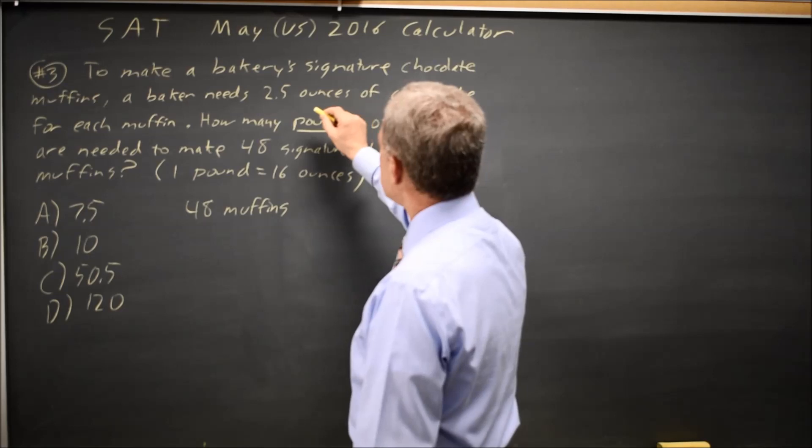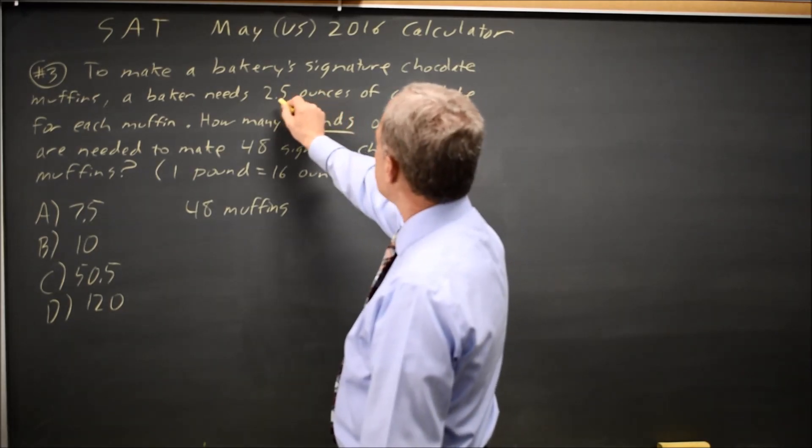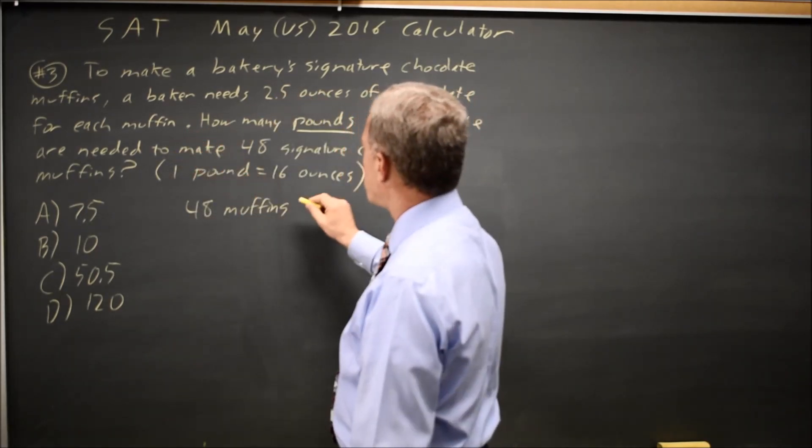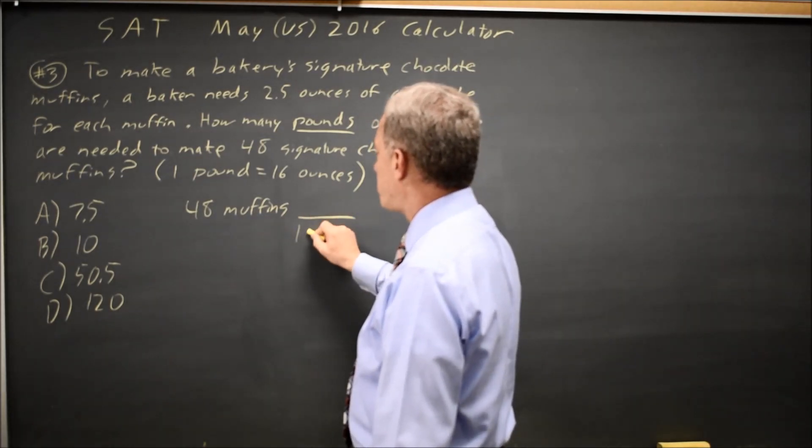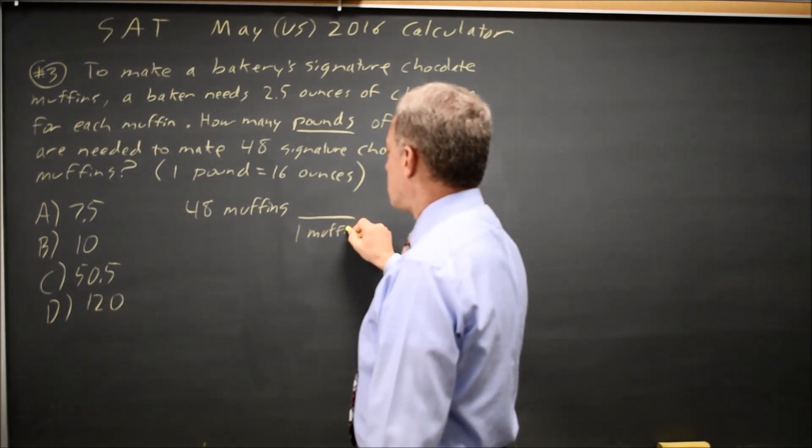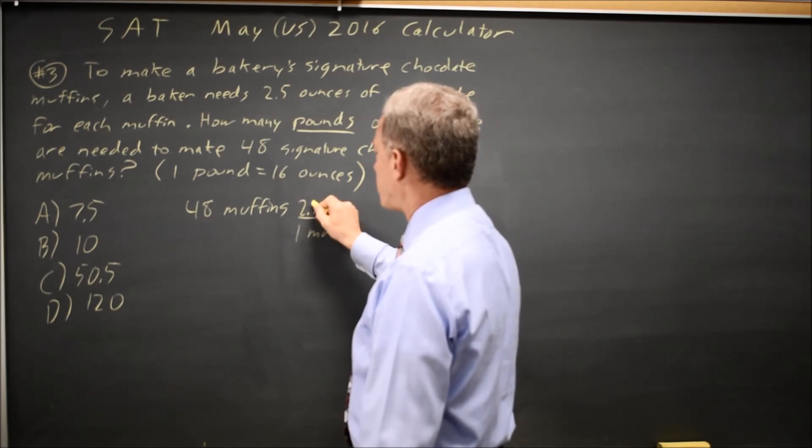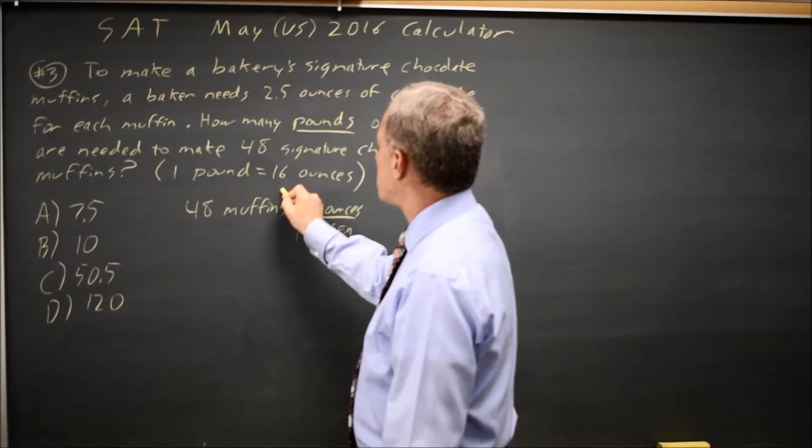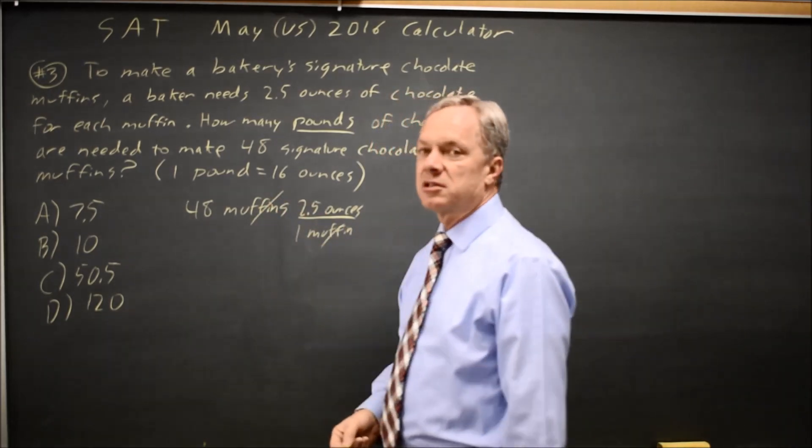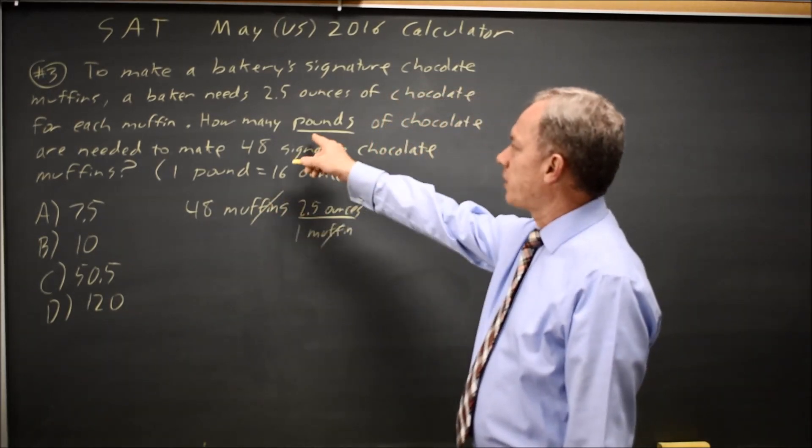So I'm told that 2.5 ounces of chocolate equals 1 muffin. Since I have muffins in the numerator, I'm going to put 1 muffin in the denominator and 2.5 ounces in the numerator. The muffins cancel and now I have ounces of chocolate, but they're asking for how many pounds.